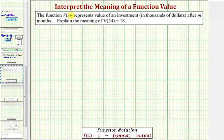So the input m represents the number of months, and the function output or function value of V of m represents the value of the investment in thousands of dollars.